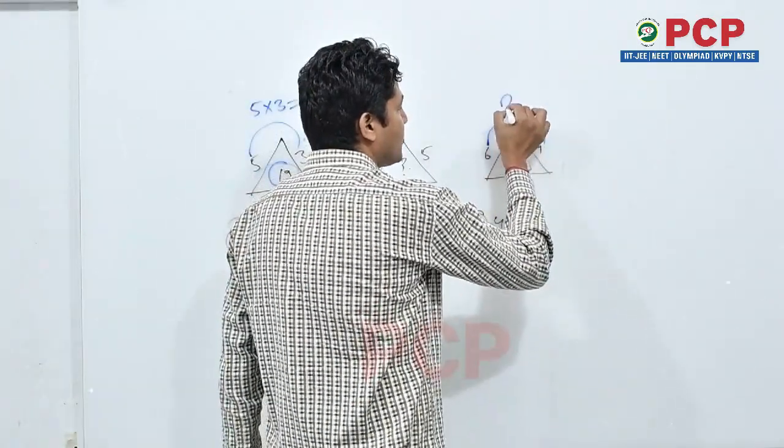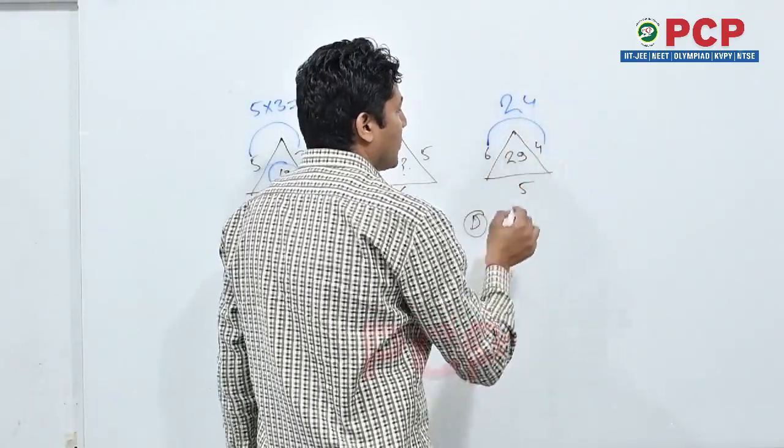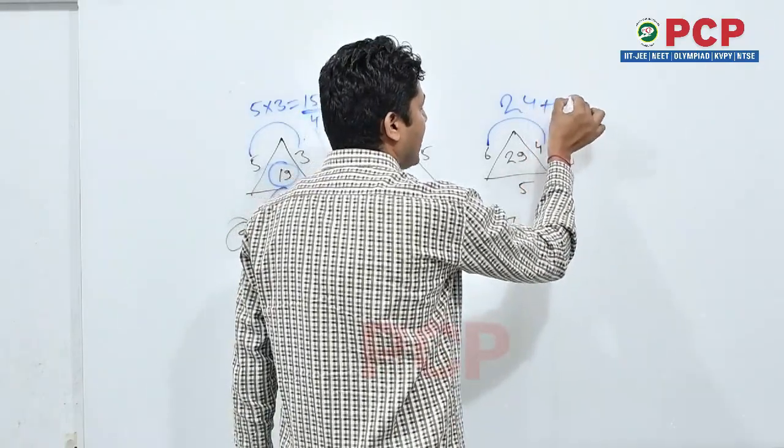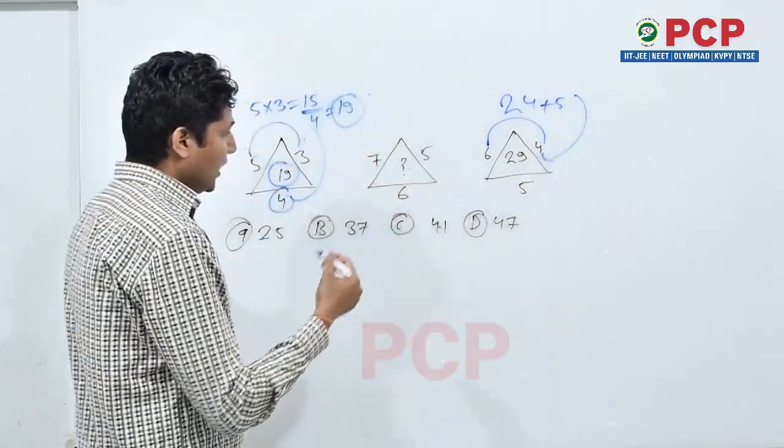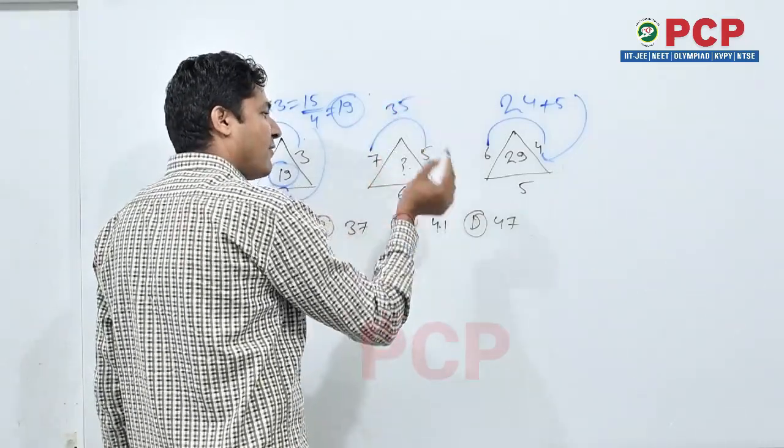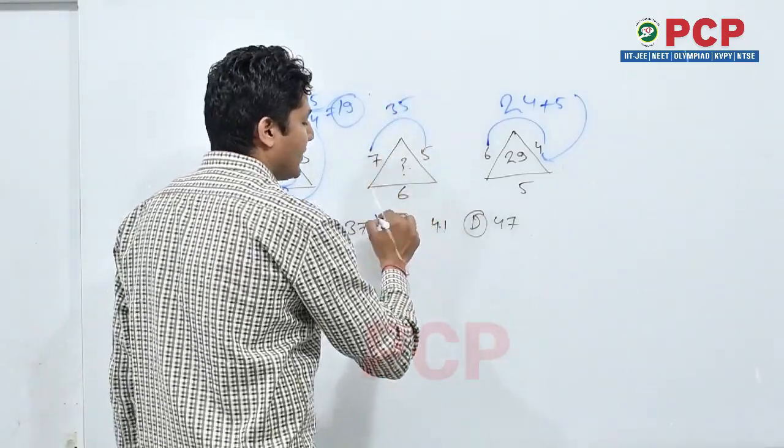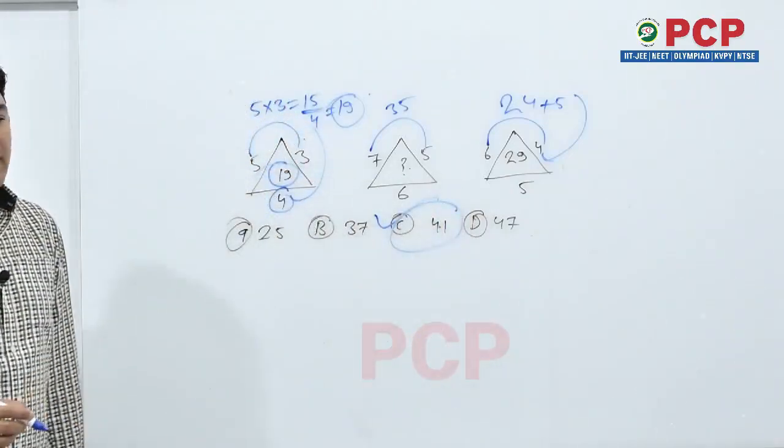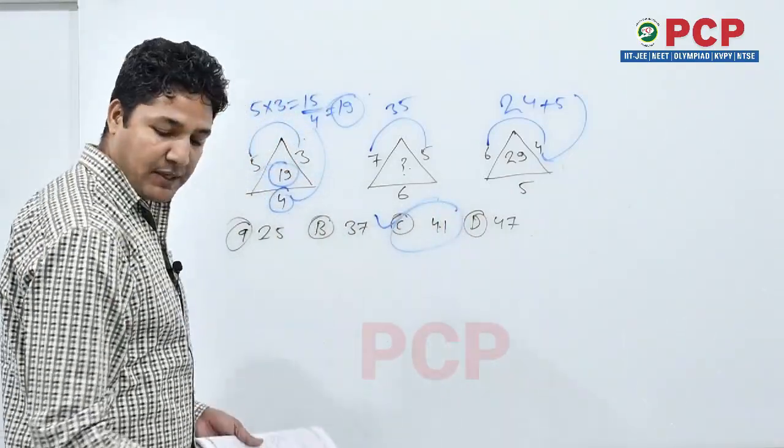Like in this, 6 into 4 is 24, 24 plus 5 that is 29. Again 7 into 5 is 35, 35 plus 6 that is 41. Means 41 will be your answer. Next question.